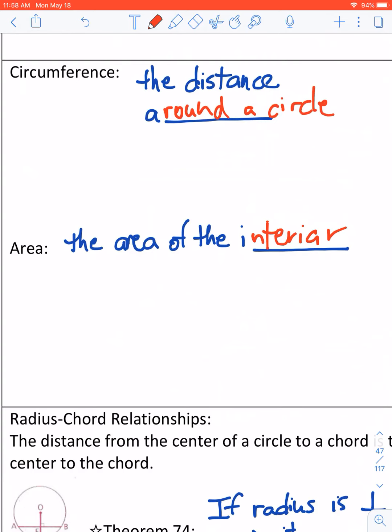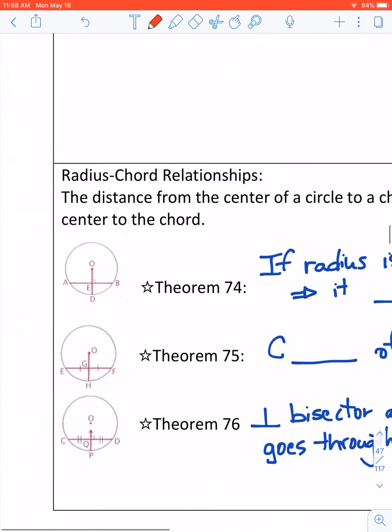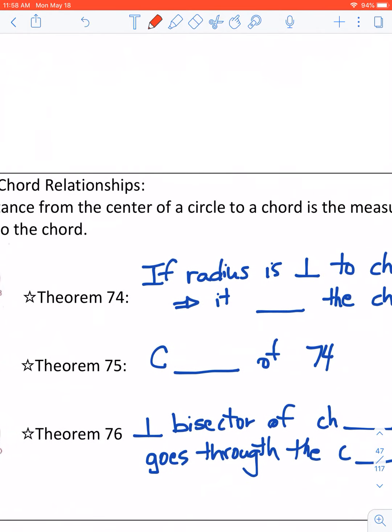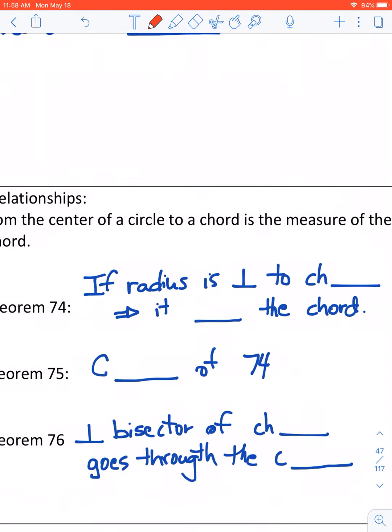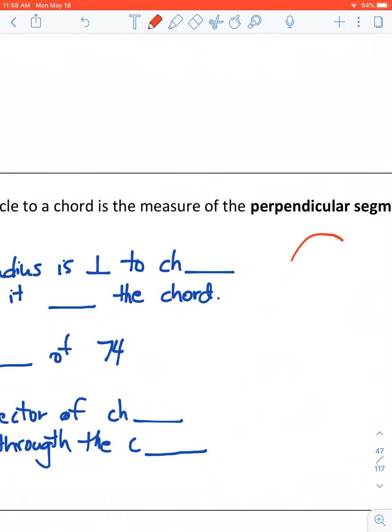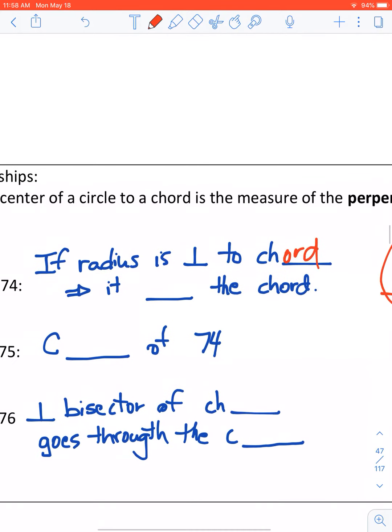Finally, there are three theorems which we need to go to. They involve, basically, radiuses and chords. So the first one. If a radius is perpendicular to the chord, right? So again, radius, perpendicular to the chord. Then it also bisects the chord.